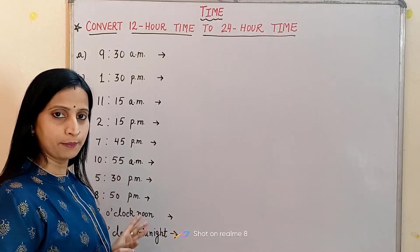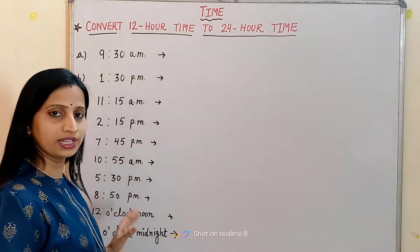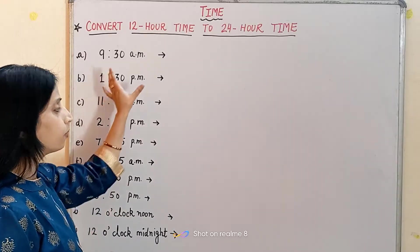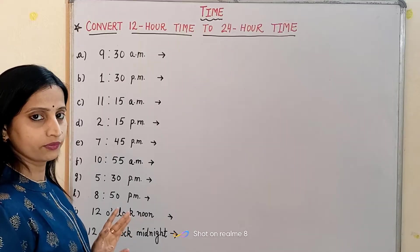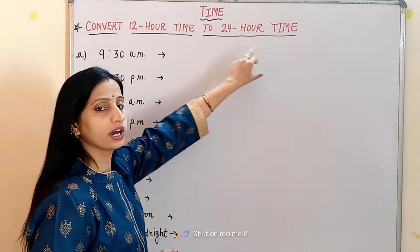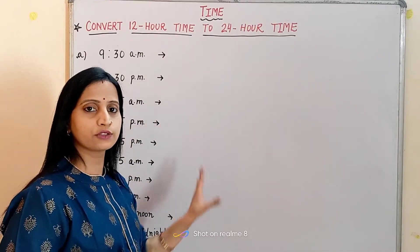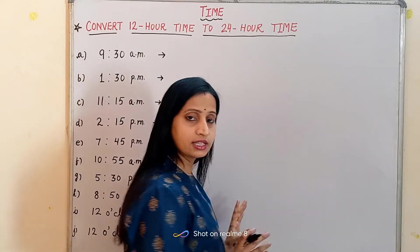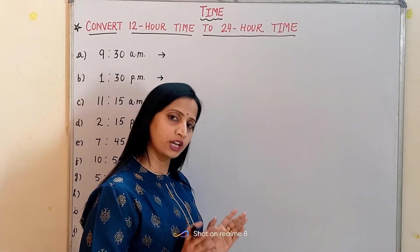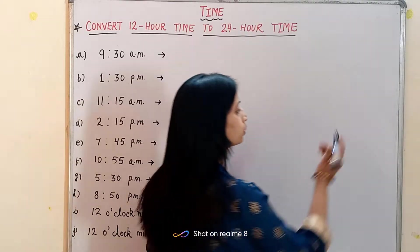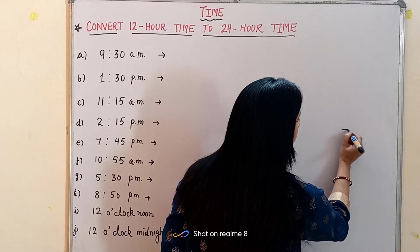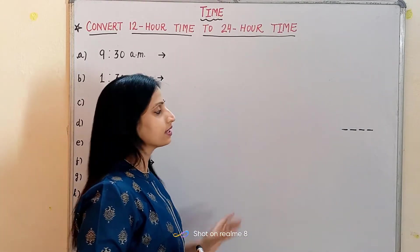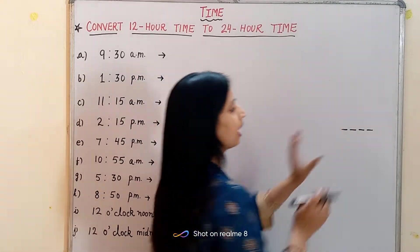Here I have written a few examples. We will learn through these examples. In all these examples time is given in the form of AM and PM, and we have to convert the time to 24-hour format. For this, first of all you have to remember two things. The first thing is: whenever we write the time in 24-hour format, we will always use 4 digits.